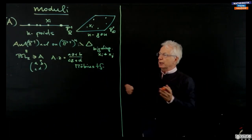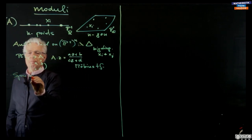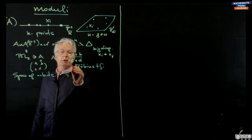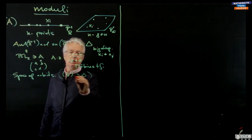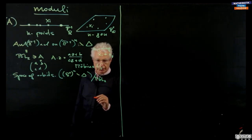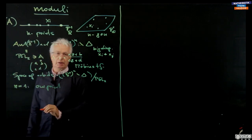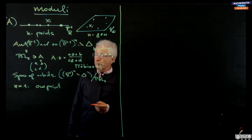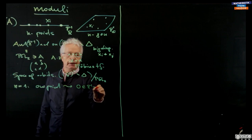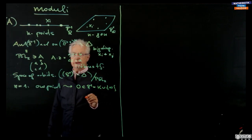The first question you can ask is: what would be the space of orbits? You could call this P1 to the n minus delta, mod PGL2. Let's start a little bit to do this. We start with n equals 1 — that's not interesting, we have just one point. It is clear that we can move it wherever we want, because the action is transitive. So we can move it to the point 0 in P1, which I identify with k union infinity.